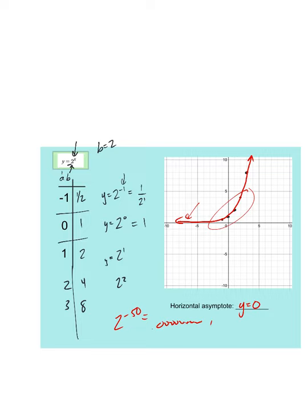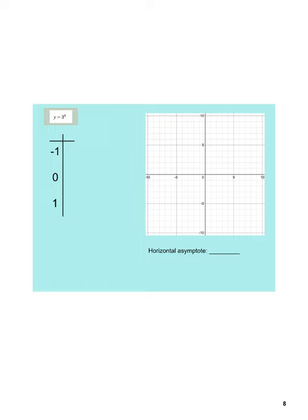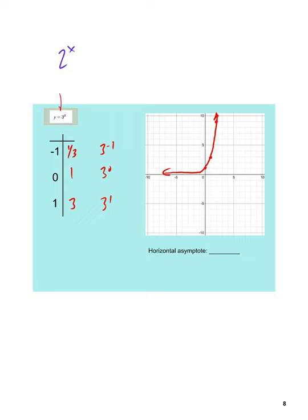Here's another one: 3 to the x. Three to the negative 1 is going to be one-third. Three to the zero is still 1, and 3 to the first is 3. Three squared, or 3 to the second, is 9. As that base increases, we start to get a steeper line — this one is even steeper than the last. On the 2 to the x graph, we had the points (1, 2), (2, 4), (3, 8), and you can see our last graph started through that same area but isn't quite as steep as 3 to the x.